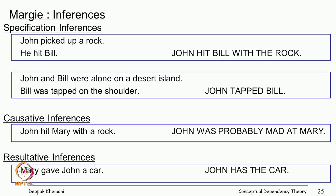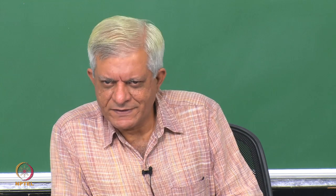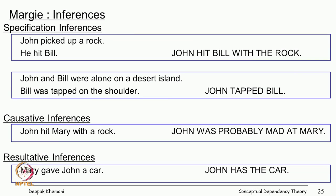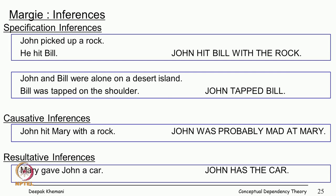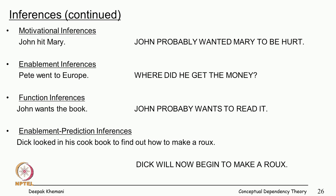What kinds of inferences can Margie make? These are common-sense inferences. 'John picked up a rock, he hit Bill' — specification inference: 'John hit Bill with the rock,' which is a plausible inference. 'John and Bill were alone on the desert island, Bill was tapped on the shoulder' — you can figure out John was the one who tapped Bill. Causative inference: 'John hit Mary with a rock' — plausible inference that John was probably mad at Mary. Resultative inference: 'Mary gave John a car' — you can infer John has the car. Motivational inference: 'John hit Mary' — he probably wanted Mary to be hurt.